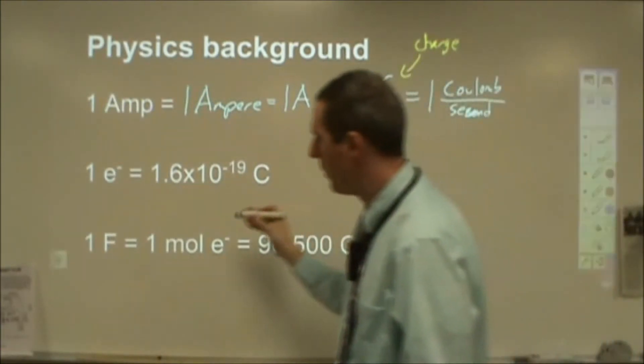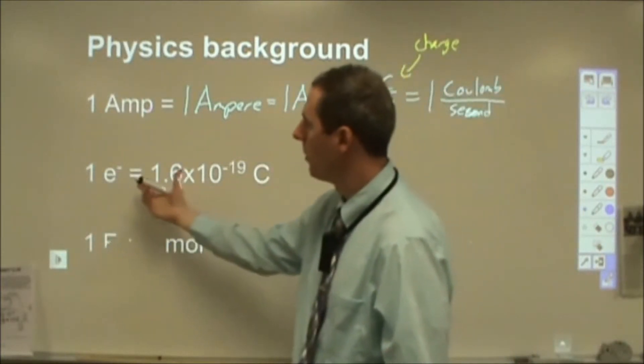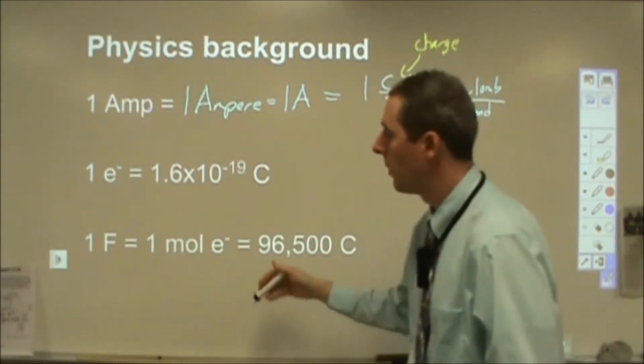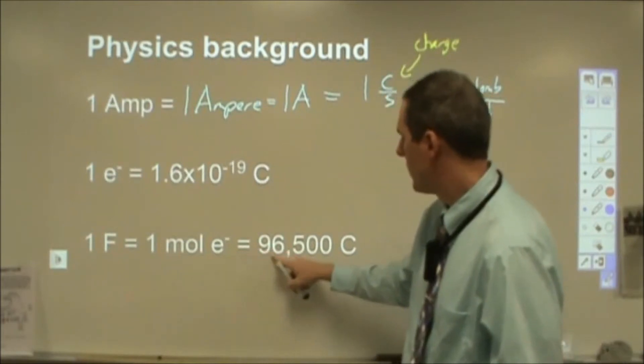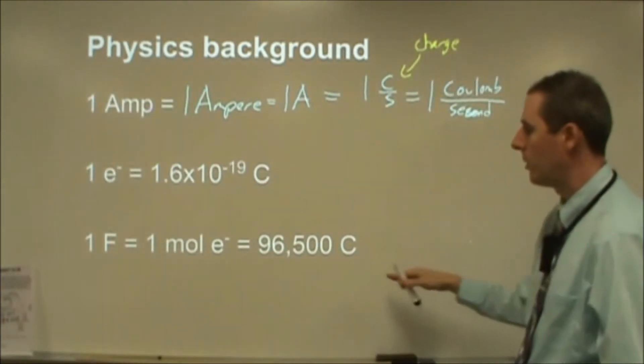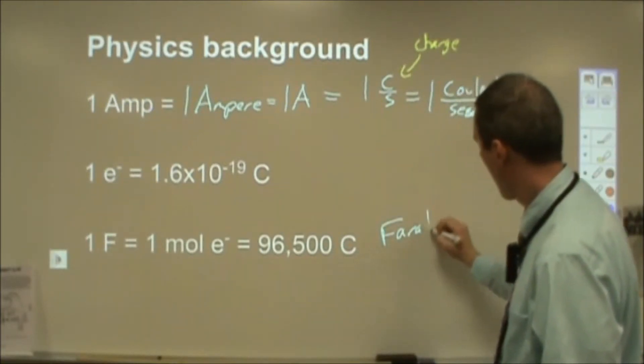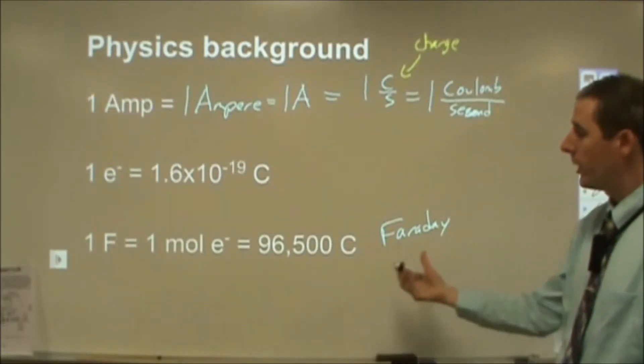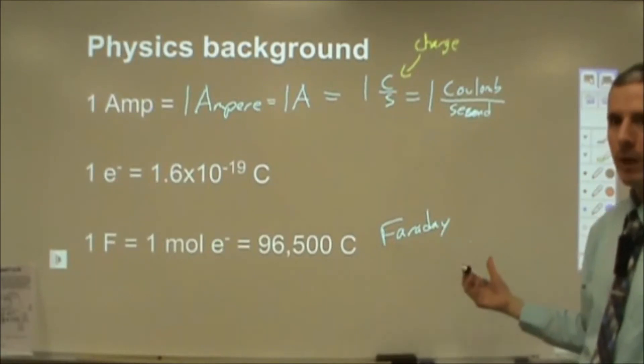So before we move into those reactions, one electron is this charge but usually when we're looking at a chemical reaction, we're looking at a much greater quantity of things compared to one. So we want to be able to work in moles. So for a mole of electrons, there's 96,500 coulombs or maybe a slightly more specific number than that. This is called a Faraday. It's the charge of one mole of electrons. We're going to use this to be able to do stoichiometry problems for coulometry.